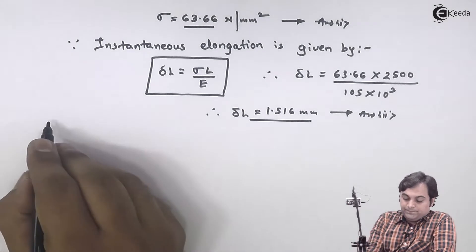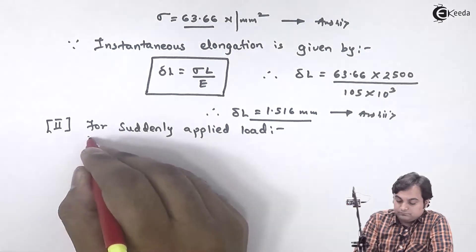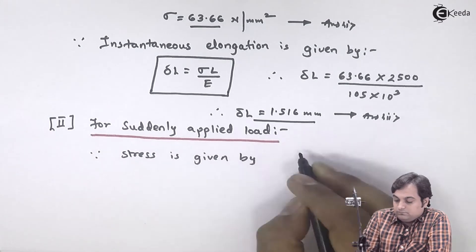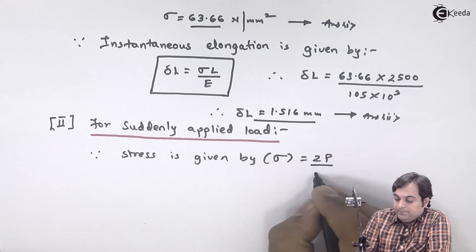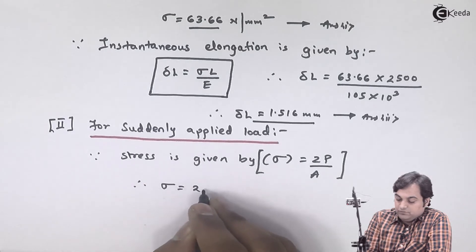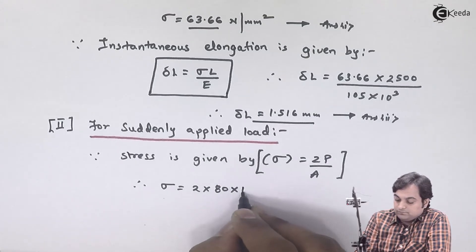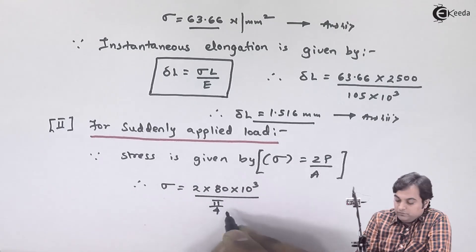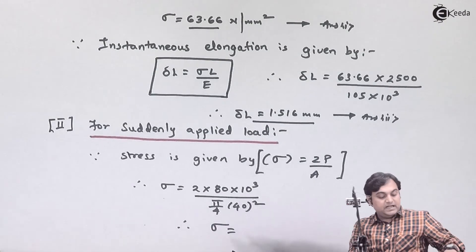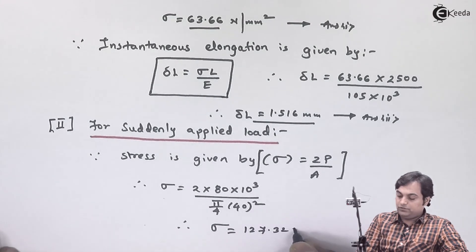Now for suddenly applied load, stress is given by Sigma equal to 2P upon A. Therefore stress is equal to 2 into 80 into 10 raised to 3 divided by pi by 4 into 40 squared. From this the stress value is 127.32 Newton per mm squared.